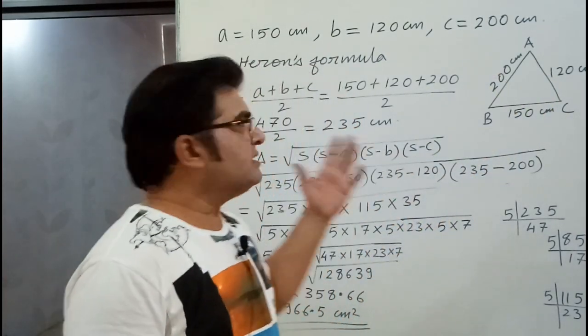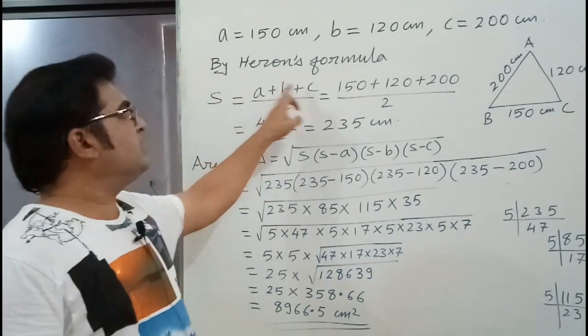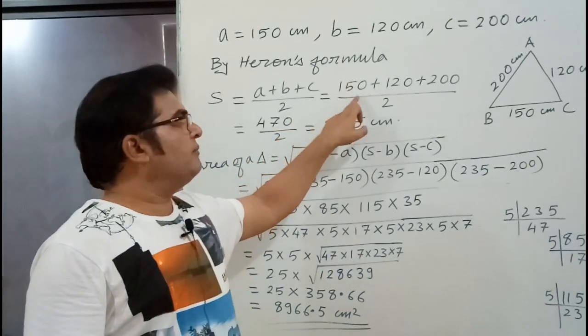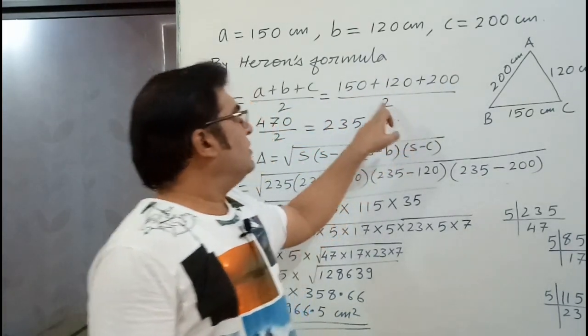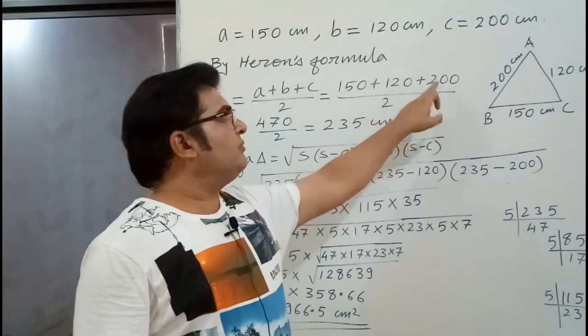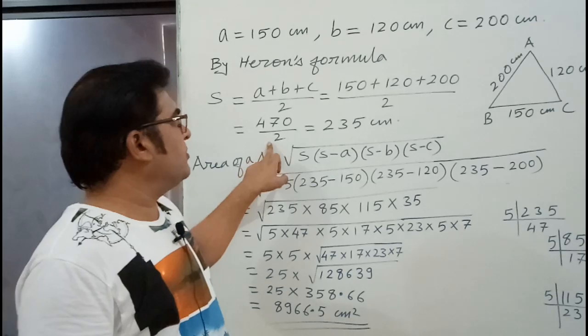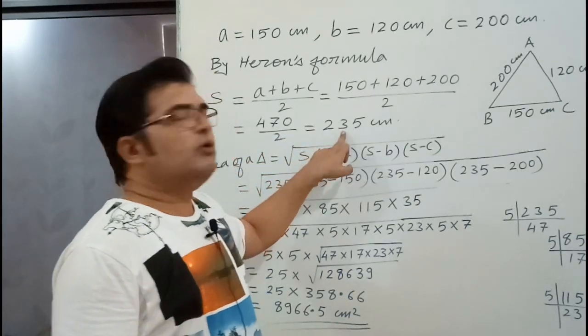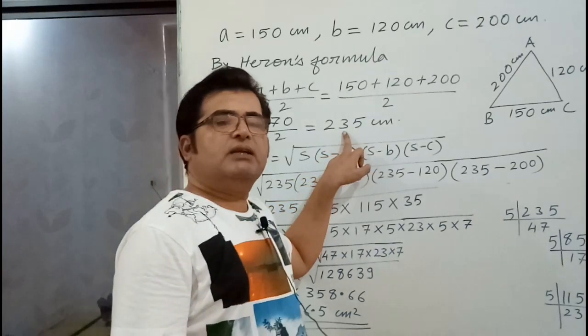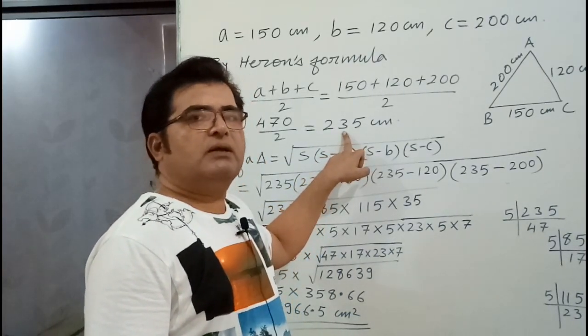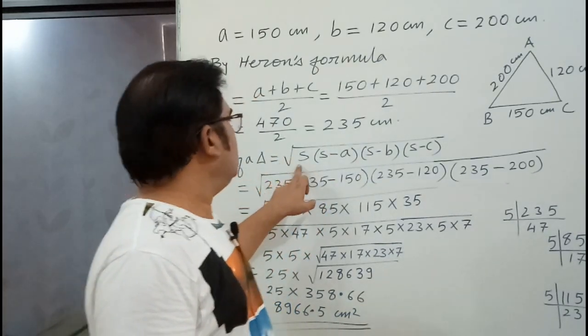First we find semi-perimeter. Semi-perimeter equal to, we represent by S, A plus B plus C upon 2. So 150 plus 120 plus 200 divided by 2. The sum becomes 470. 470 upon 2 equals 235 cm. Semi-perimeter we got 235 cm. Value of S is 235 cm.